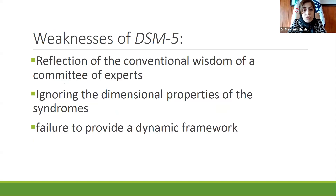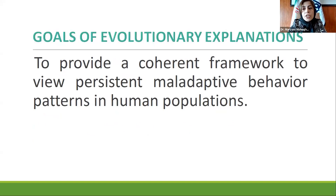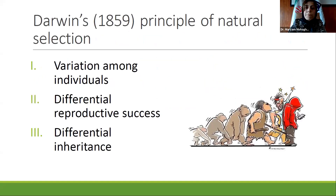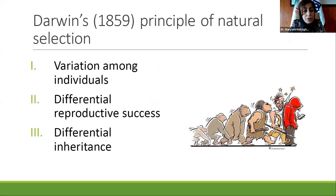Many of the criteria are just a reflection of the community of experts' views, and it ignores the dimensional properties of many symptoms. Also, it fails to provide a dynamic framework. In evolutionary explanation, the principal goal is to provide a coherent framework to view persistent maladaptive behavior patterns in human populations. Whenever we talk about evolution, we can't ignore Darwin's principle of natural selection, which posits three points.